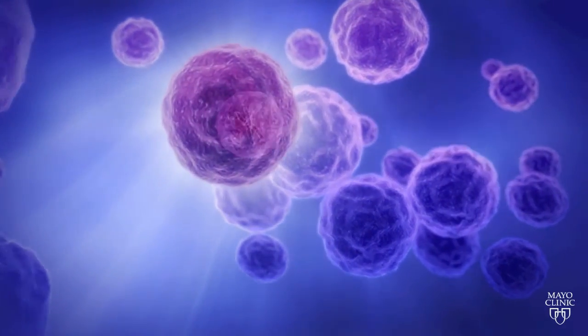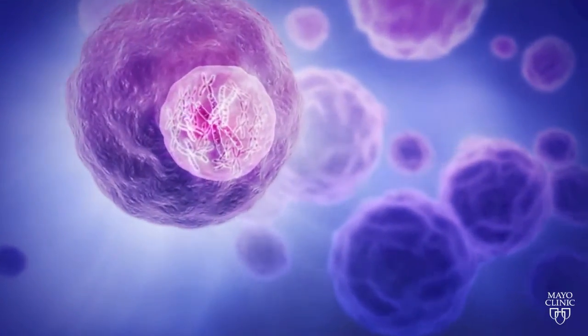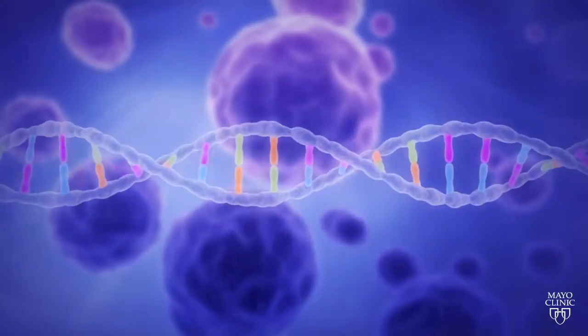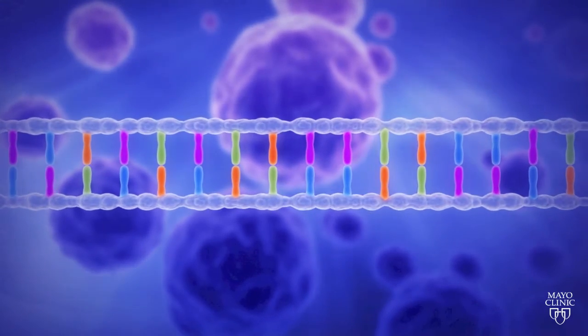In the lab, technicians extract DNA and prepare it for sequencing. Within every normal cell, there are 23 pairs of chromosomes that house DNA. Think of DNA as the blueprint to how you are made.